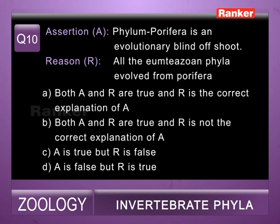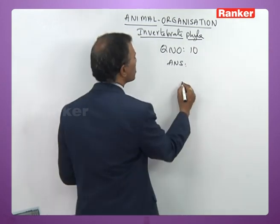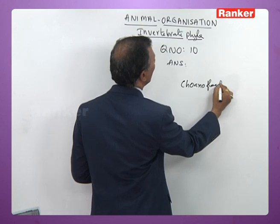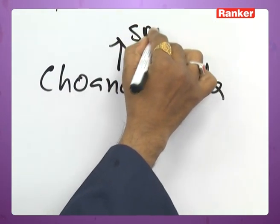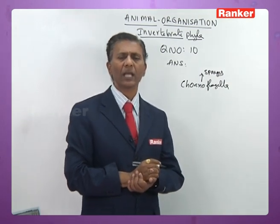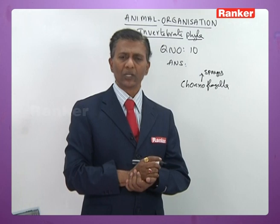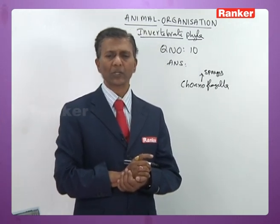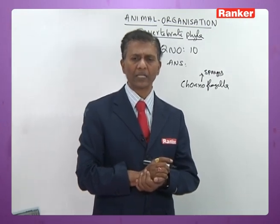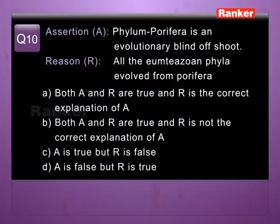Tenth question — assertion: phylum Porifera is an evolutionary blind offshoot. Reason: all the eumetazoan phyla evolved from Porifera. Poriferans are called blind offshoot because choanoflagellates of Protozoa gave rise to sponges, but sponges did not give rise to any higher phyla. However, the reason is wrong — eumetazoan phyla did not evolve from Porifera. So assertion is correct but reason is false. Tenth question correct answer is c.